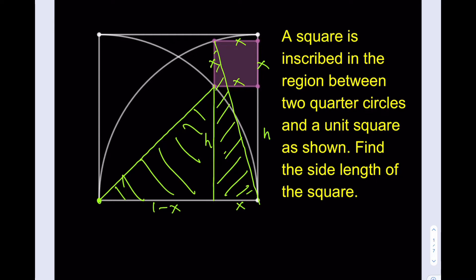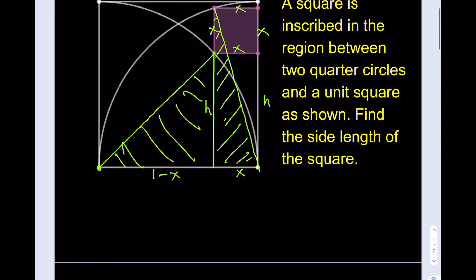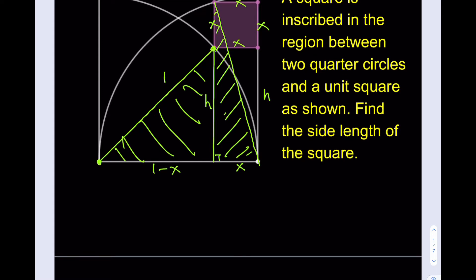Let's go ahead and write down the Pythagorean theorem and get to solving this. As you know, this is going to be the radius, which is one, and the hypotenuse here is also one. Both hypotenuses are one. So the first one: one minus x squared plus h squared is equal to one.